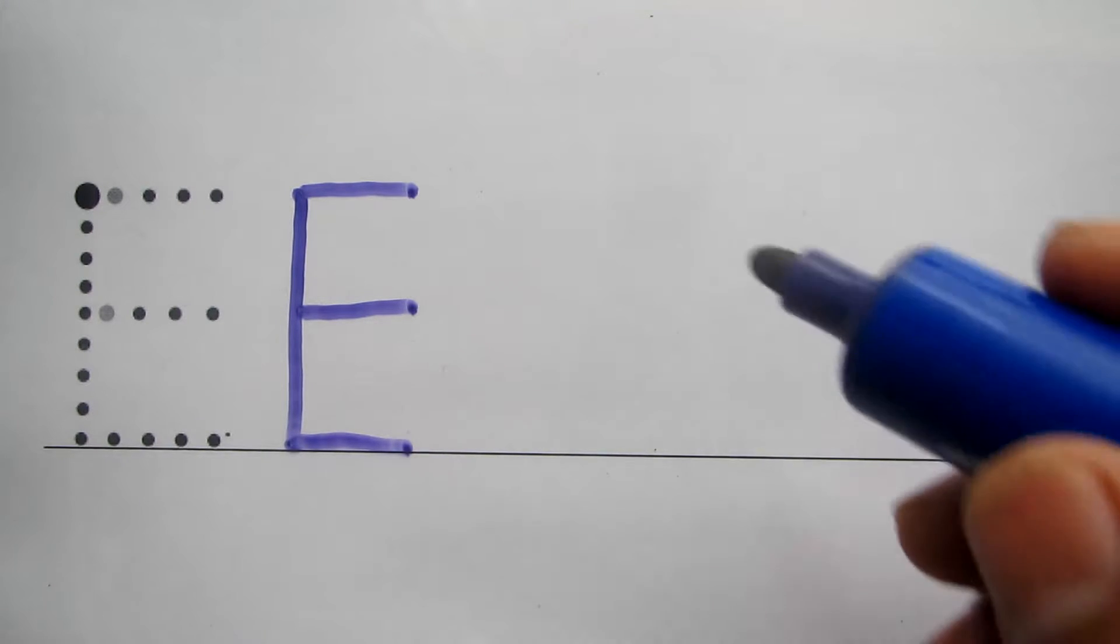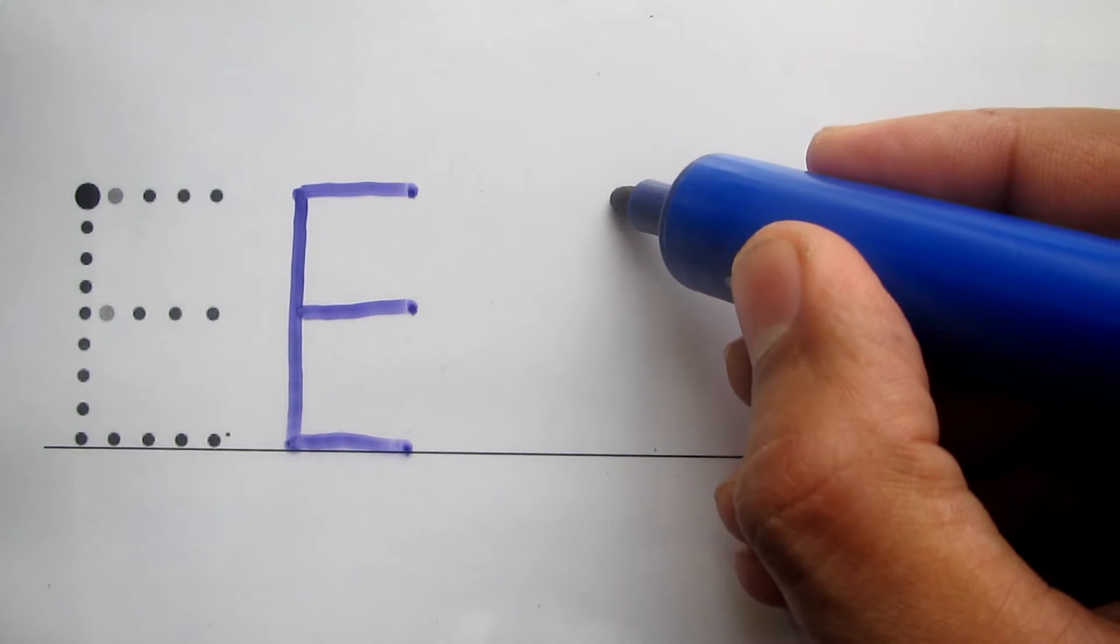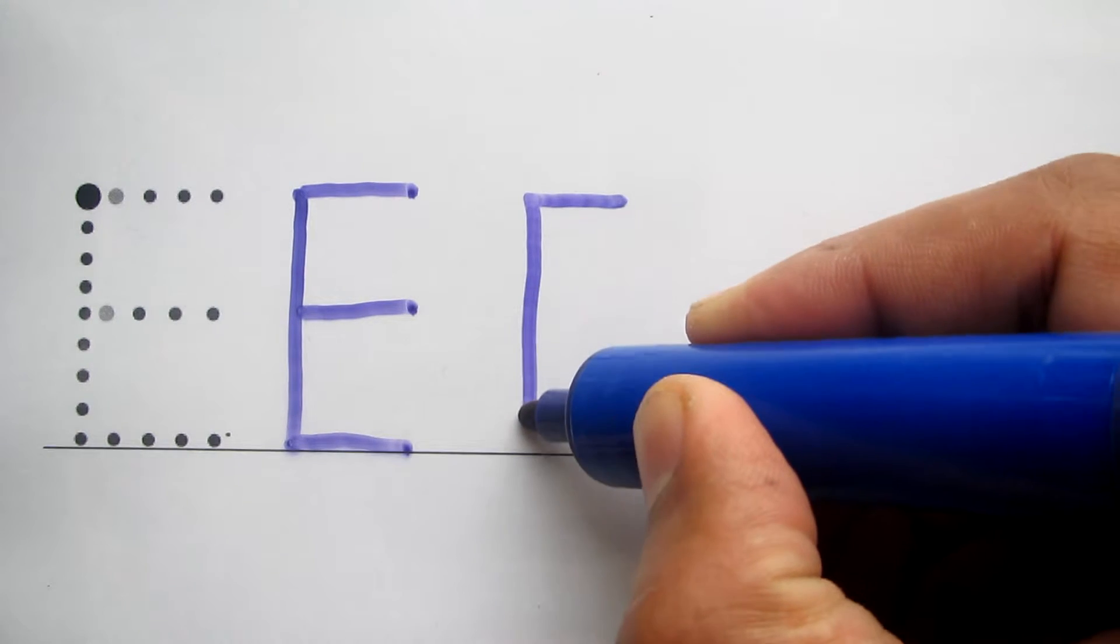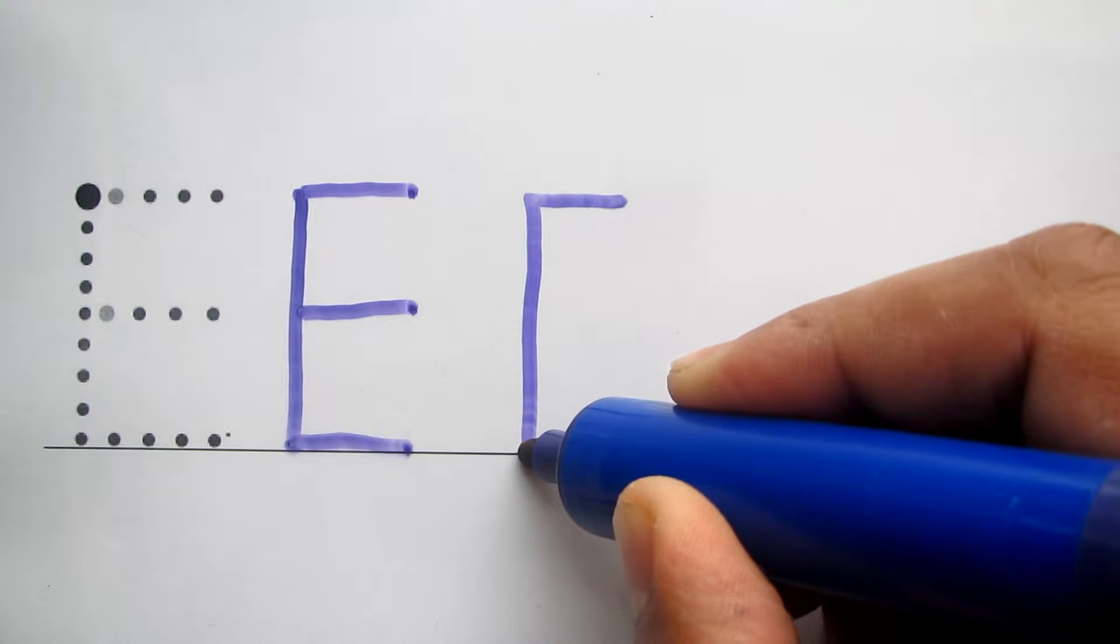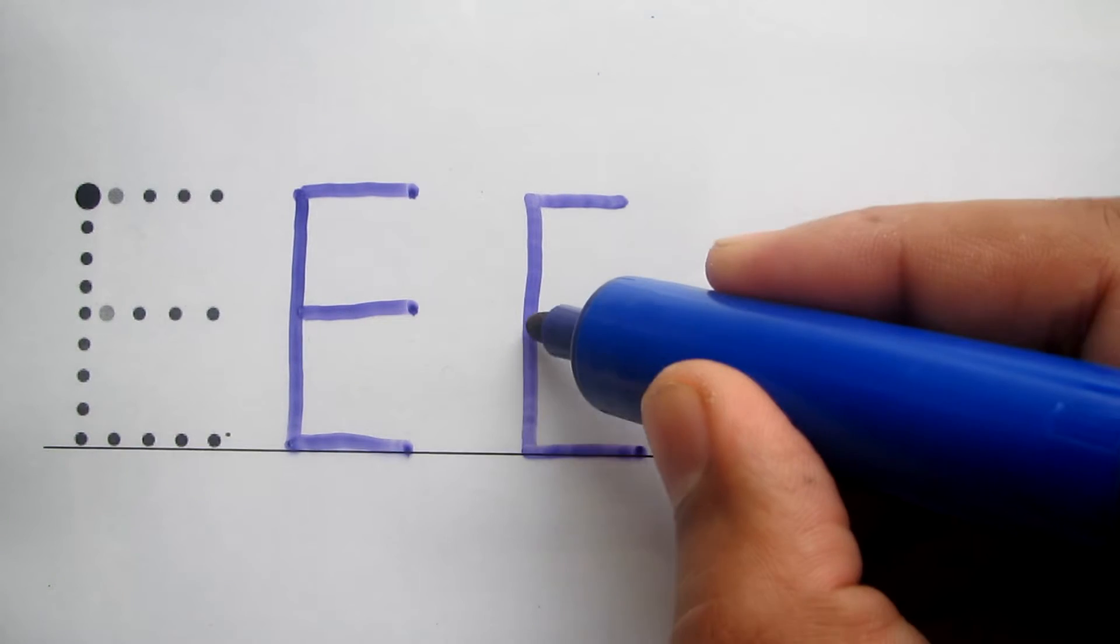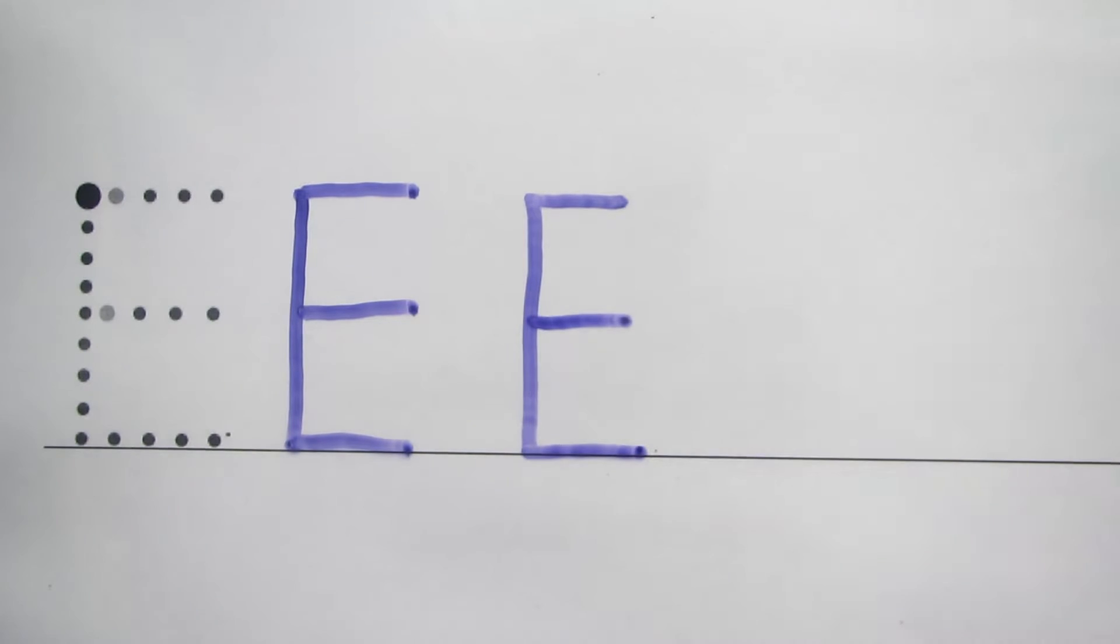You will also see this version. You start there, go across, keep your pen on the paper, straight down to the bottom, keep your pen on the paper and go back across. So in one stroke and then you just finish it off with a line in the middle.